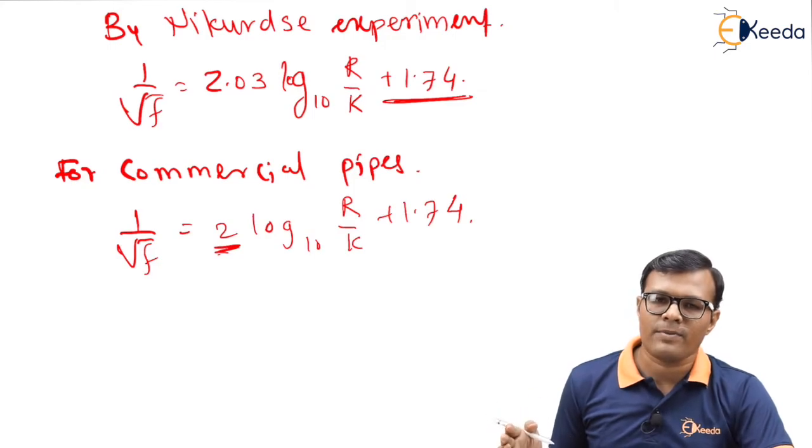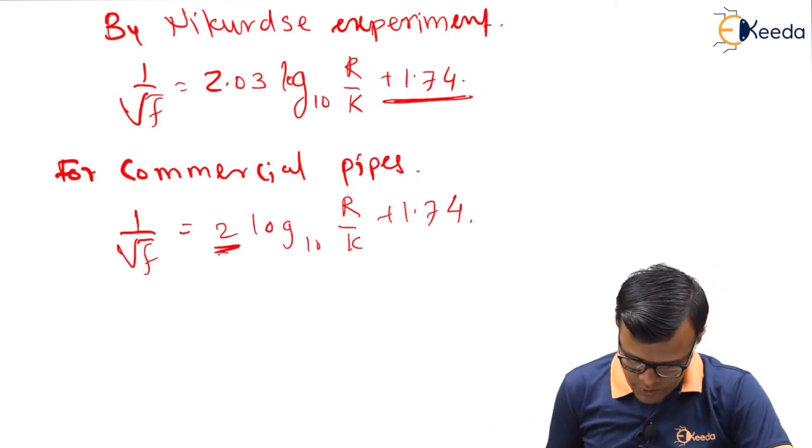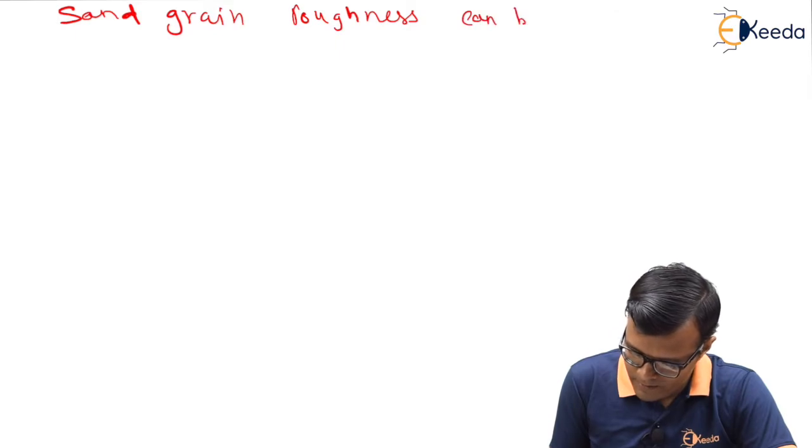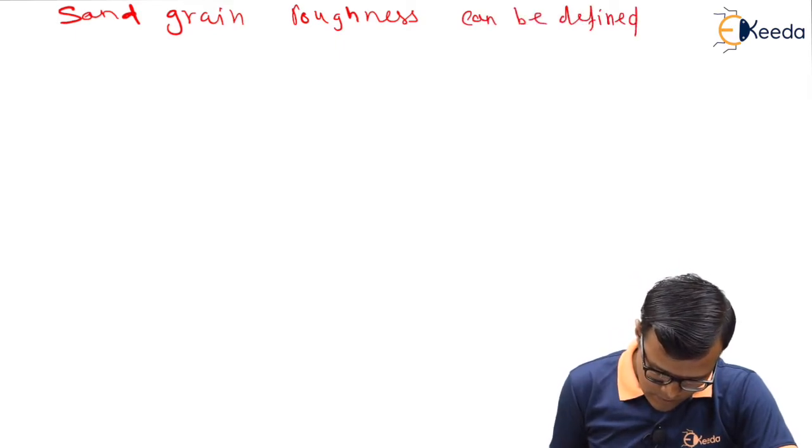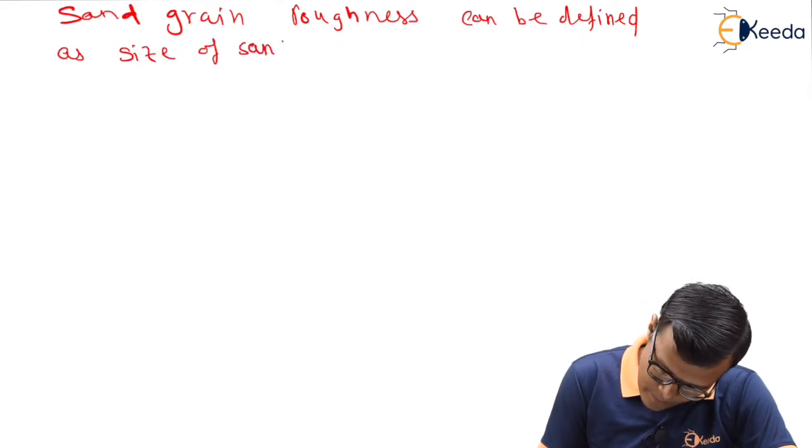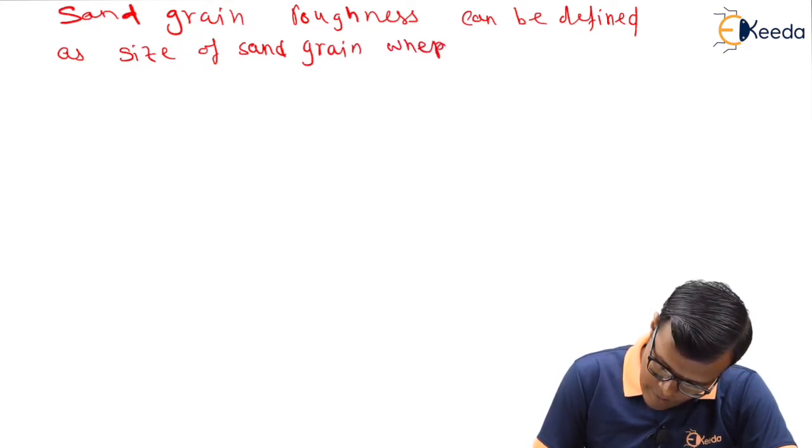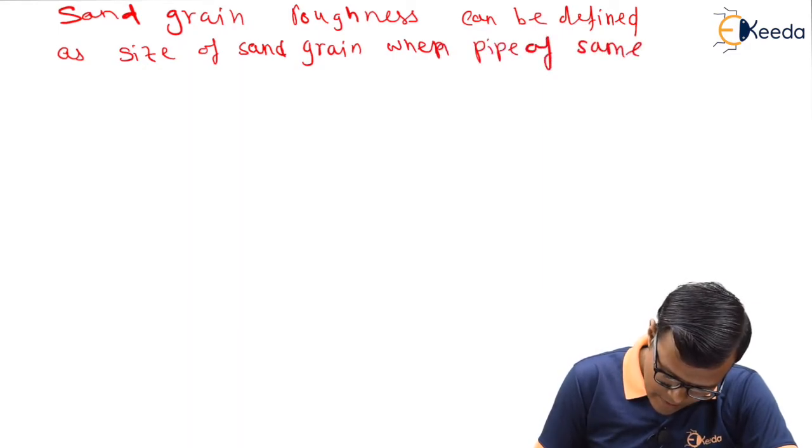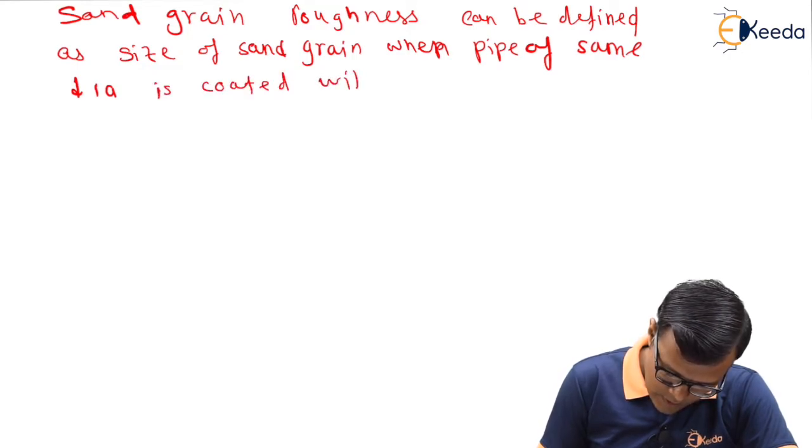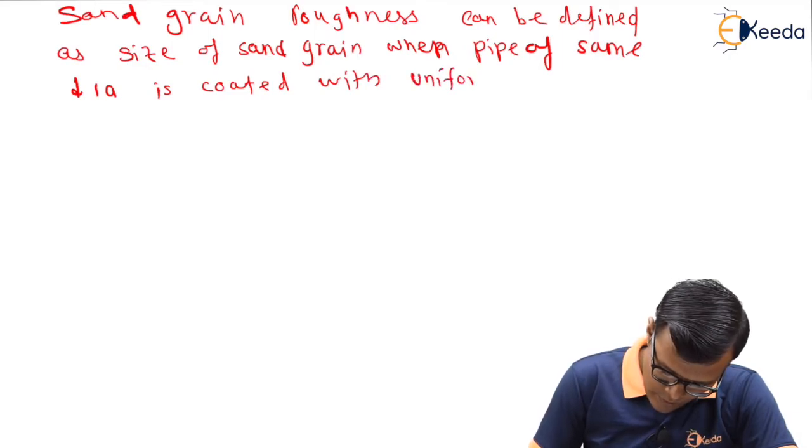Here the basic concept of sand grain roughness is involved. So let us see. Sand grain roughness can be defined as size of sand grain when pipe of same dia